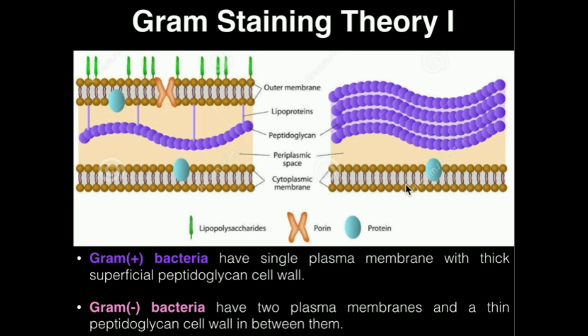So, gram-positive bacteria have a single plasma membrane, and superficial to that — outside of it — they have a thick peptidoglycan layer. In case you don't know, peptidoglycan is a structural and protective layer of their cell wall that makes them more resilient to our immune system and other potential threats to them.